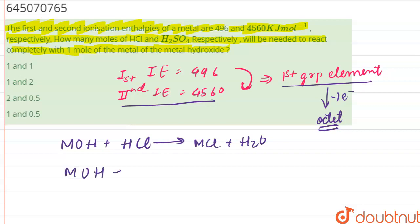when MOH will react with 1 by 2 H2SO4, it will form half mole of M2SO4 plus H2O.